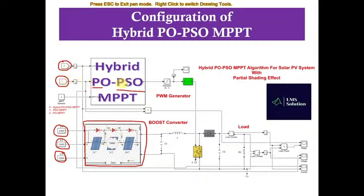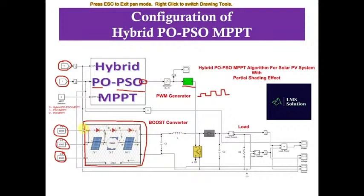Based upon the PV panel voltage and current, a duty cycle is generated. A PWM generator uses this duty cycle to generate the pulse for the IGBT of the boost converter. This controls the power flow in the boost converter to extract the maximum power under partial shading condition as well as normal irradiation condition. This model can be operated in three modes: hybrid PO-PSO MPPT mode, PSO MPPT mode, and PO mode.